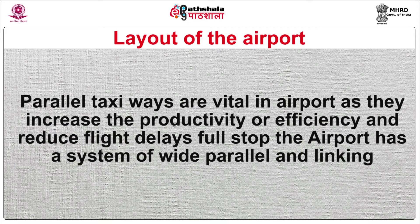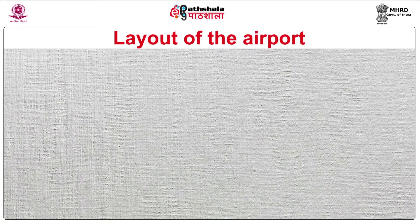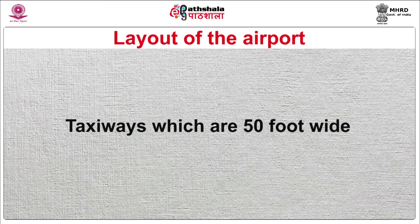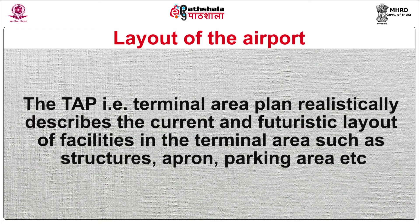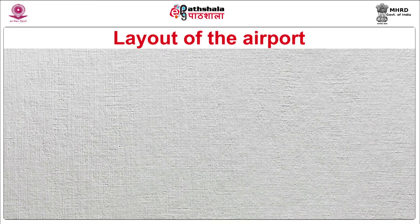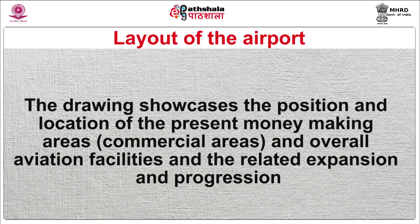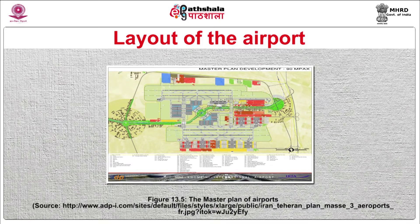Parallel taxiways are vital in airports as they increase the productivity or efficiency and reduce flight delays. The airport has a system of wide parallel and linking taxiways which are 50 feet wide. The Terminal Area Plan (TAP) realistically describes the current and futuristic layout of facilities in the terminal area such as structures, apron, and parking areas. The drawing showcases the position and location of the present commercial areas and overall aviation facilities and their related expansion and progression. The terminal building acts as a gateway to the community.